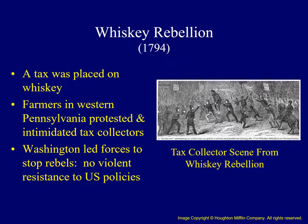One final item associated with Hamilton's policies resulted in the Whiskey Rebellion. To help raise revenues, a tax of 7 cents per gallon was placed on the sale of whiskey. When crowds in western Pennsylvania protested the tax and intimidated tax collectors in actions reminiscent of the American Revolution, President Washington responded with surprising strength, leading a militia of 13,000 to disperse the rebels. This demonstrated the new government would not allow violent resistance to its policies.